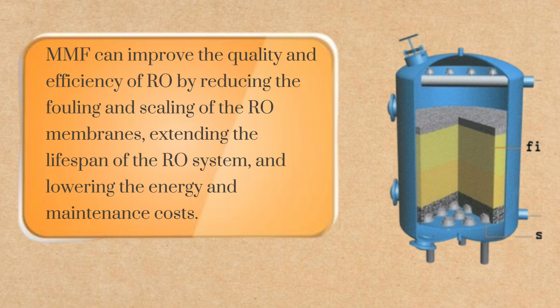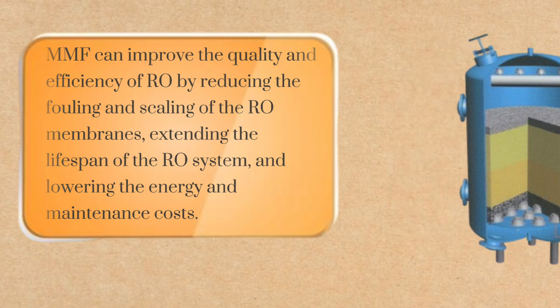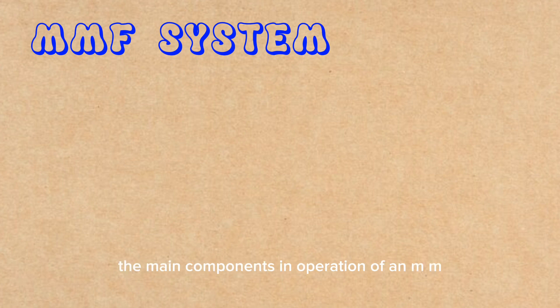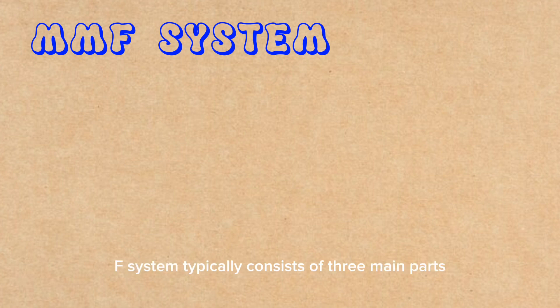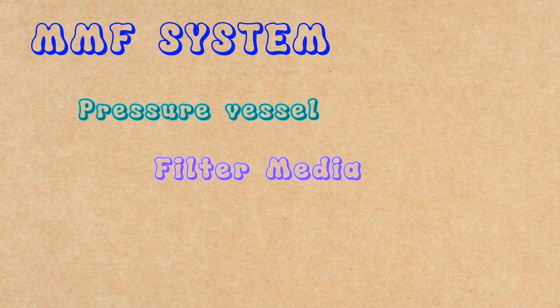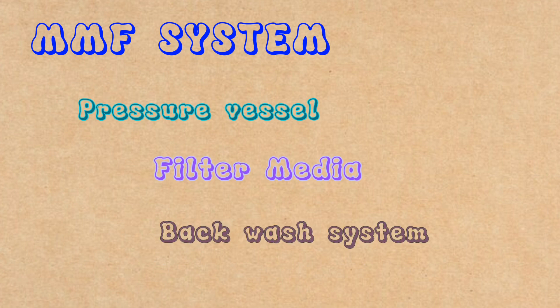So, how does MMF work? Let's take a closer look at the main components in operation of an MMF system. An MMF system typically consists of three main parts: a pressure vessel, a filter media, and a backwash system.